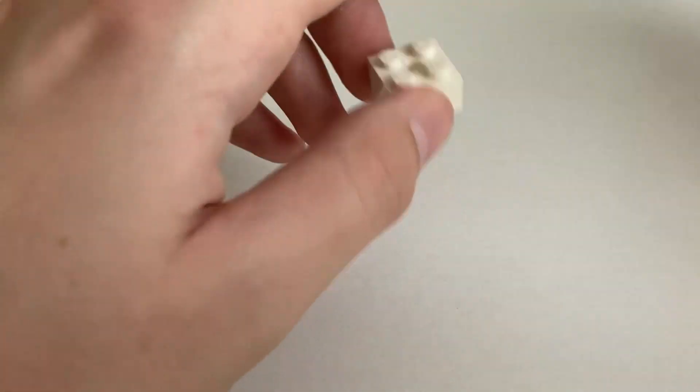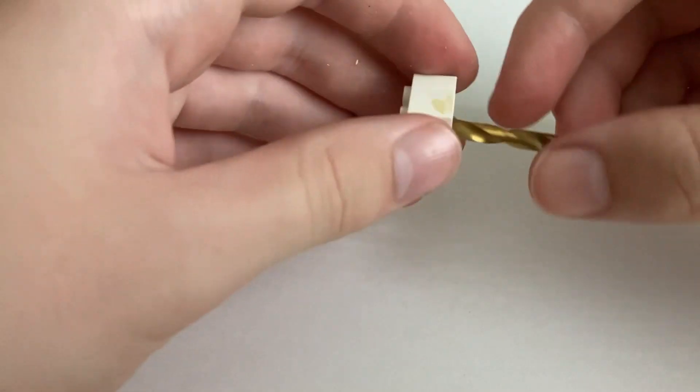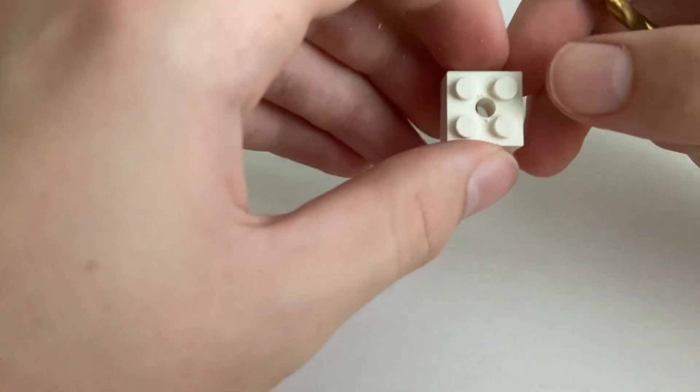Next you want to take the 2x2 brick and then use an 11/64 drill bit and then drill through the center part like that so that's hollow on the inside.